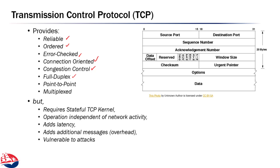TCP has built-in congestion control to make sure data doesn't overwhelm the receiver, routers, or network links between sender and receiver. It is full duplex — opening a TCP connection allows both client and server to be senders and receivers simultaneously, giving the illusion of a point-to-point protocol where you're the only thing talking to the remote server. It is also multiplexed, allowing multiple clients to talk to the same server, the server to run multiple applications, and clients to have multiple TCP connections open at once.